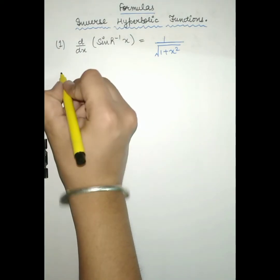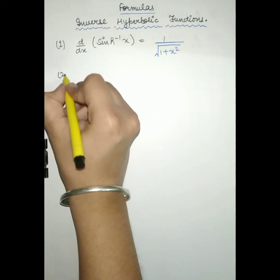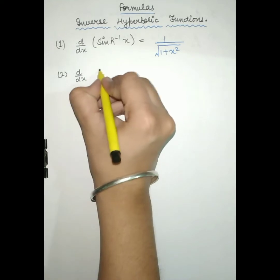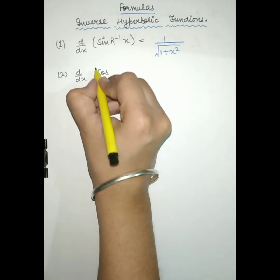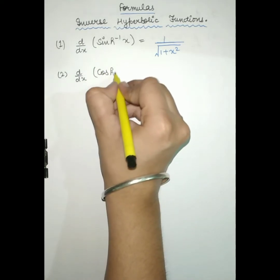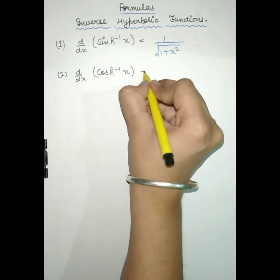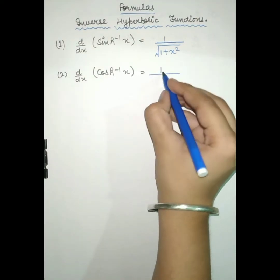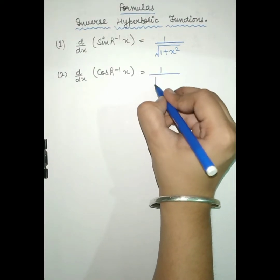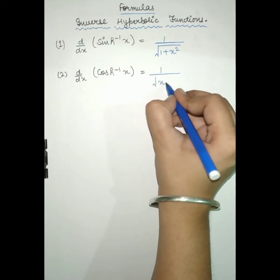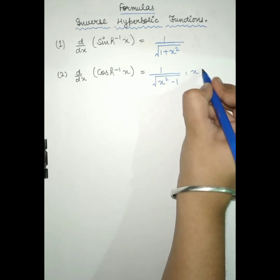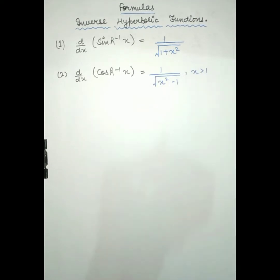Second is the derivative of cos hyperbolic inverse x, which will be equal to 1 upon root of x square minus 1, where x is greater than 1.